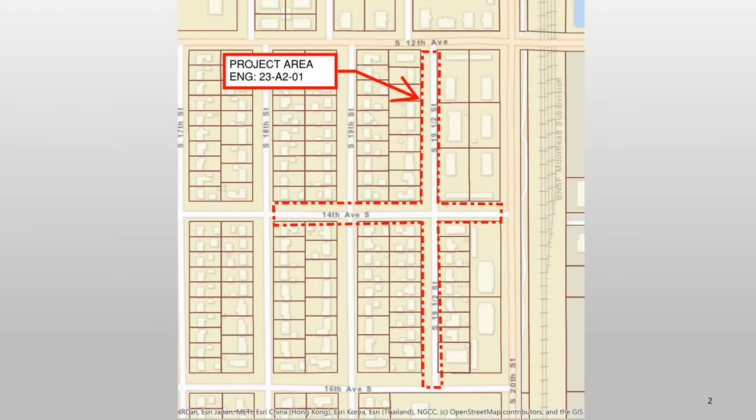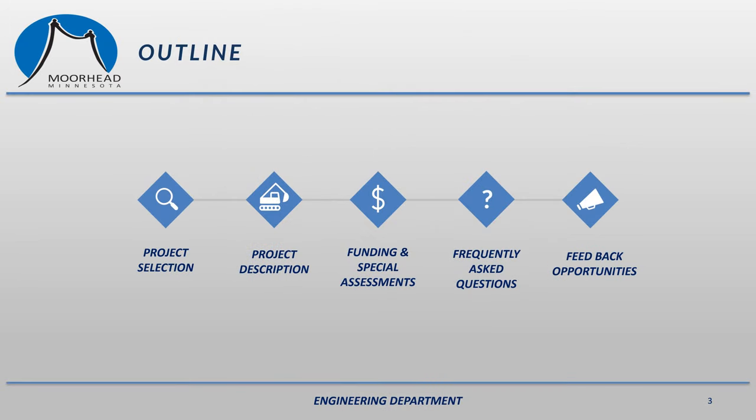This is a vicinity map for the project and shows the rough limits of construction. The project area includes 14th Avenue South from 18th to 20th Street, and 19th and a half Street South from 12th Avenue South to 16th Avenue South. In this presentation we'll go over a brief explanation of how the city selects its project areas, how we decide which streets to do, the different types of work we can do, the type of work we are proposing to do in your neighborhood, funding and special assessments, frequently asked questions, and an opportunity for residents to provide feedback.